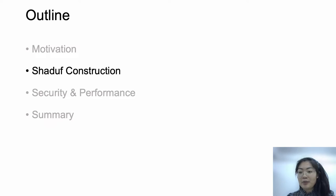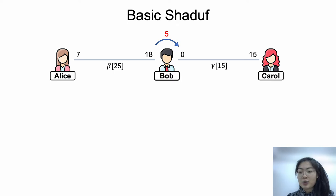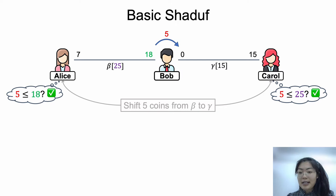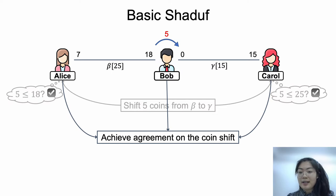To address the above limitations, we propose Shadoff, and it derives from a basic structure. Consider the case: Bob has two channels, beta and gamma. In channel beta, the channel capacity is 25 and Bob has 18 coins. In channel gamma, the channel capacity is 15 and Bob has 0 coins. Now Bob wants to shift 5 coins from beta to gamma. We enable the shift to be performed off-chain and without relying on the cycle setting. Firstly, Bob sends the shifting request to Alice and Carol for their confirmation. For Alice, it needs to be verified that Bob has no less than 5 coins in beta. For Carol, it needs to be verified that channel beta has sufficient coins to pay for the shift — that is, the coins to be shifted out of beta is no more than beta's capacity. If correct, the users proceed the shift procedure and achieve agreement on the coin shift.